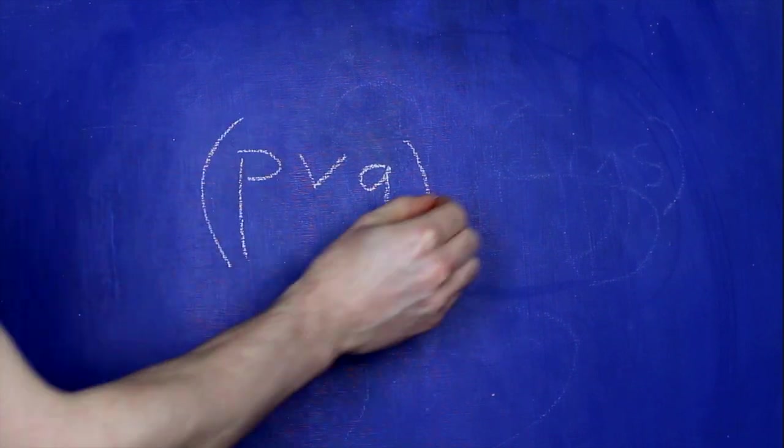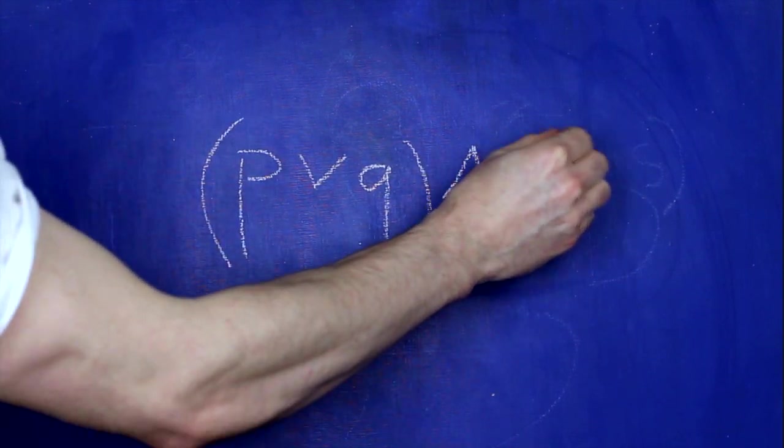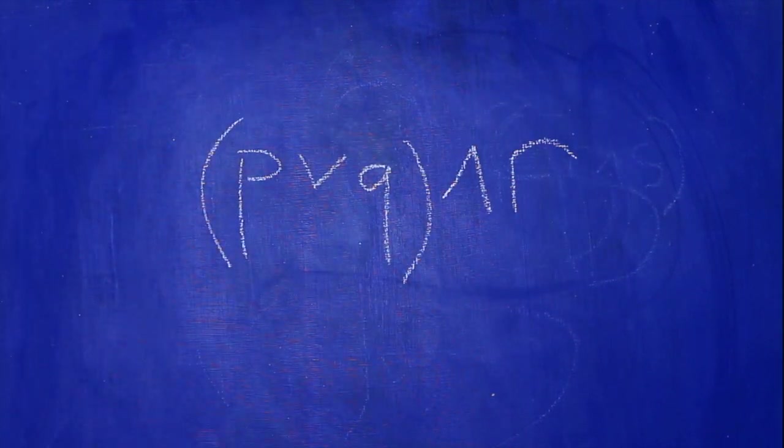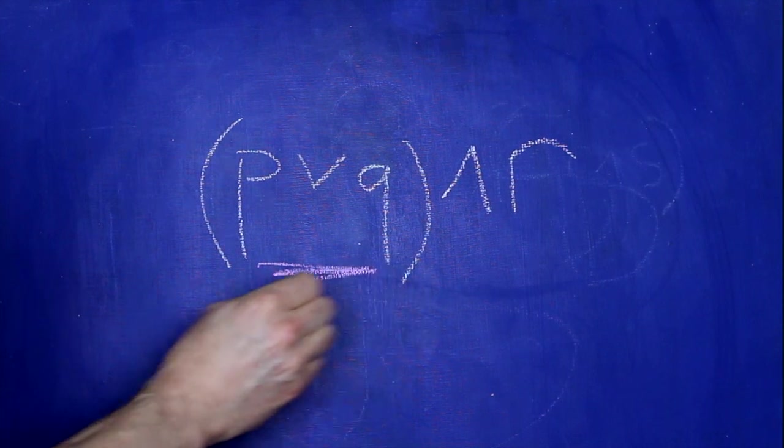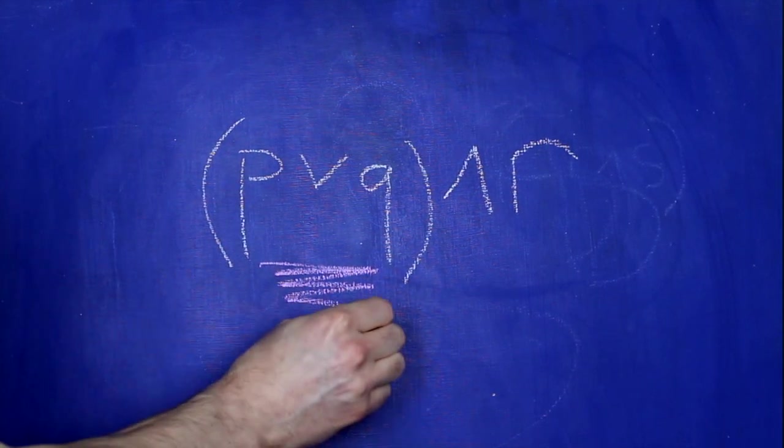But here's a sentence that isn't in disjunctive normal form. It's a conjunction, but one of its conjuncts is a disjunction. So it's not in disjunctive normal form.